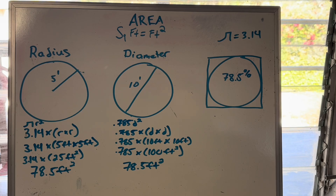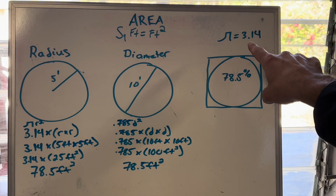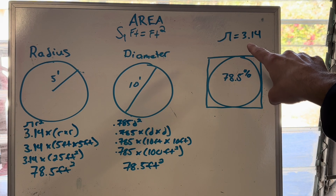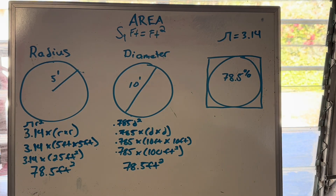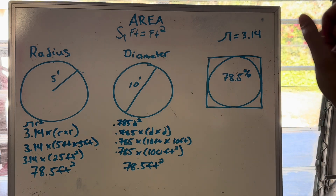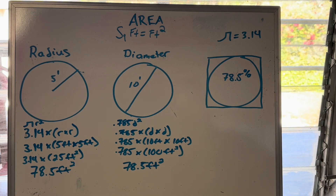Let's first start with radius. To solve for the surface area of a circle with radius, you need something called pi — those of you who remember from middle school geometry, that symbol equals 3.14. For the sake of wastewater exam math, you only ever really go two decimal places. If you get an answer with six decimal places on your calculator, you would round that to the second decimal place. That's a pretty good rule of thumb.